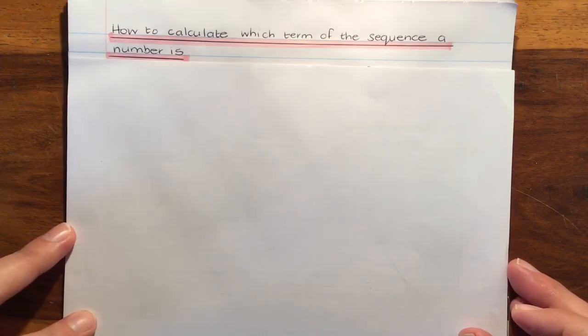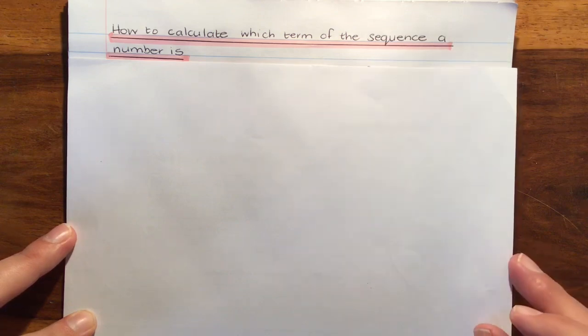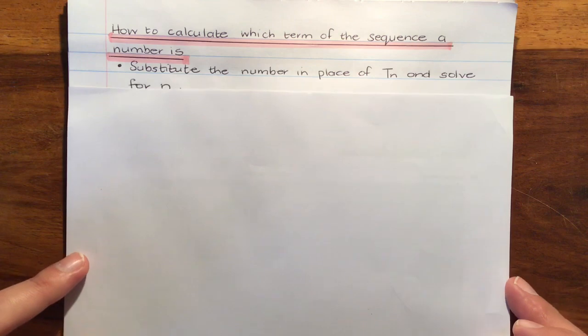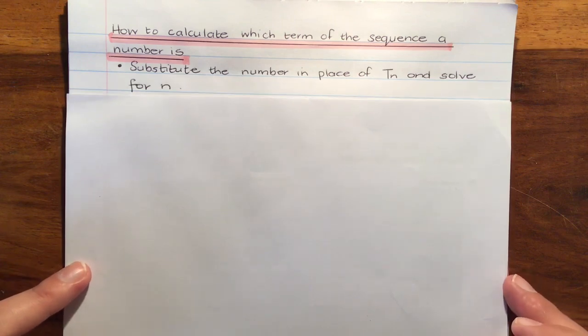Now, how do we calculate which term of the sequence a particular number is? We are going to substitute the number that we have in place of Tn and we are going to solve for n.